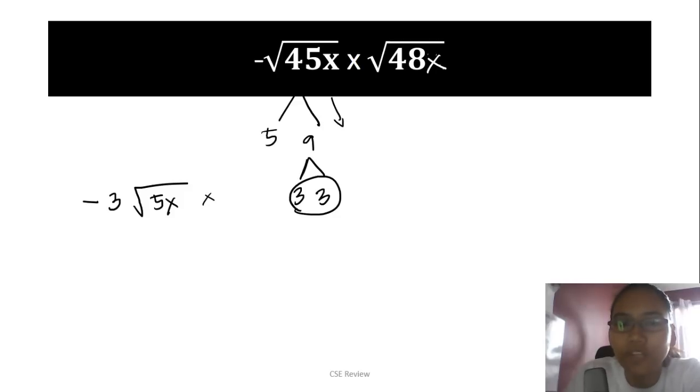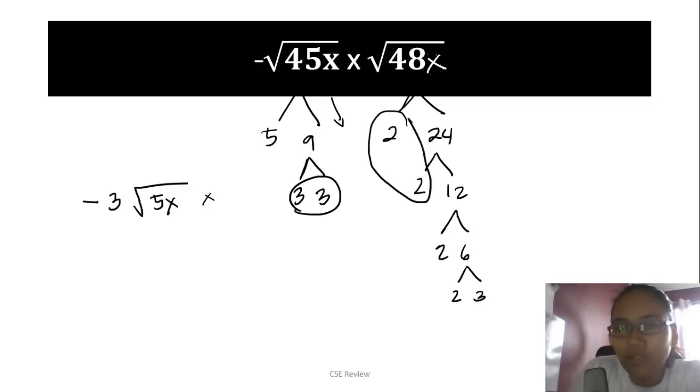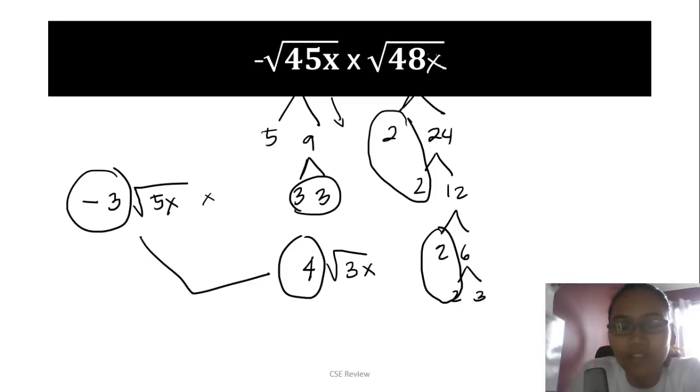Times 4√(48x). Factor it. You have 2 and 24, 2 and 12, 2 and 6, and 2 and 3. What do you do next? Take out everything with a pair. You have 2 and 2, which is 4. Then 3, and x stays inside. Now what? Watch carefully. Everything outside, you can combine—multiply them right away. So negative 3 times 4 is negative 12.